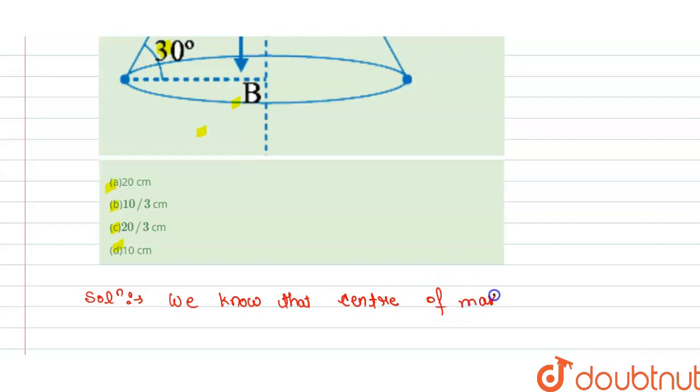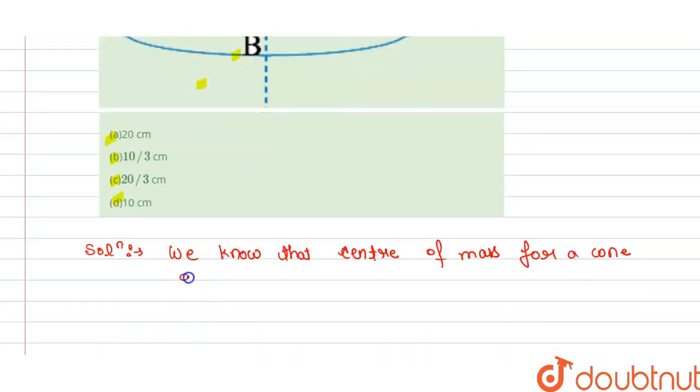equals to height divided by 4. So it equals to height of cone, the total height of cone, and this is divided by 4.